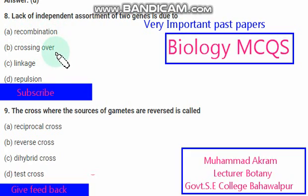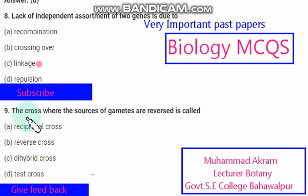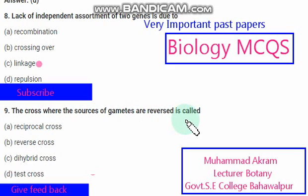Recombination, crossing over, linkage, repulsion — the right option is option C, linkage. The cross where the source of gametes are reversed is called — reciprocal cross. The right option is option A.